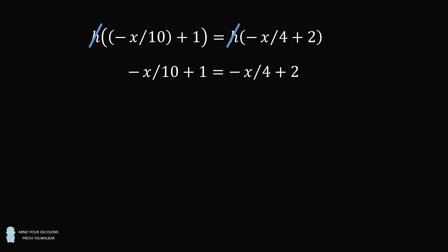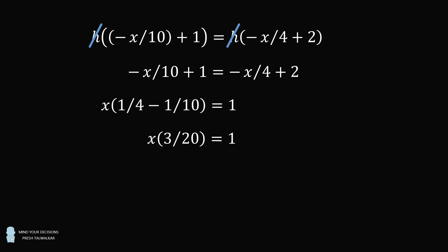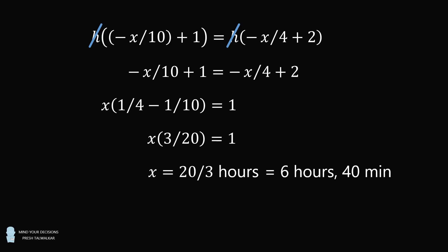We then have negative x over ten plus one is equal to negative x over four plus two. We can then group like terms: one over four minus one over ten is equal to three over twenty. We multiply both sides by twenty over three, and we get the answer that x is equal to twenty over three hours, which is equal to 6 hours and 40 minutes. And that's the answer.